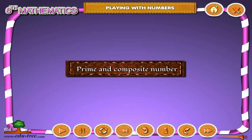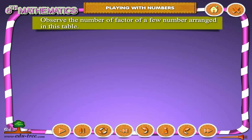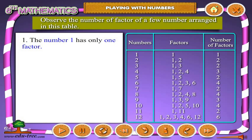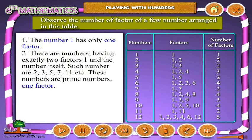Prime and composite numbers. Observe the number of factors of a few numbers arranged in this table. The number one has only one factor. There are numbers having exactly two factors — one and the number itself — such as two, three, five, seven, eleven, etc. These numbers are prime numbers.